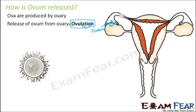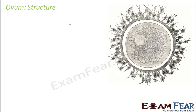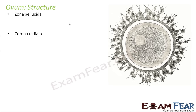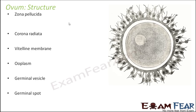Now let us look at the structure of the ovum in a little more detail. The ovum has the following important layers: zona pellucida, corona radiata, vitelline membrane, ooplasm, germinal vesicle, and germinal spot.